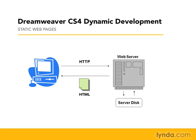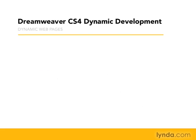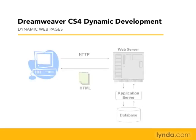When the browser makes a request for a static web page, it sends this request over the HTTP protocol, the request is received by the web server, and the web server retrieves the file from its server disk. It then returns the HTML file's content, which is pure text, over the HTTP connection to the browser.